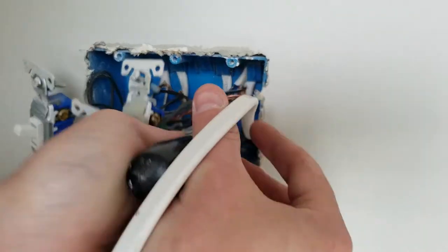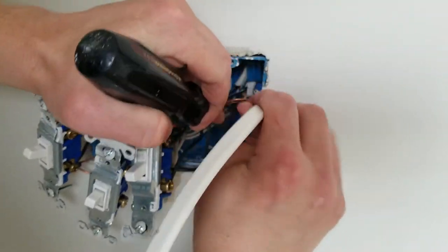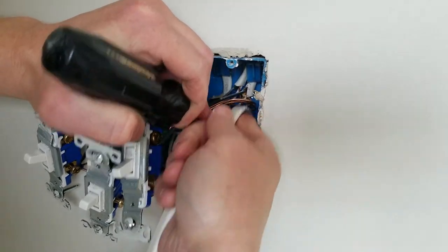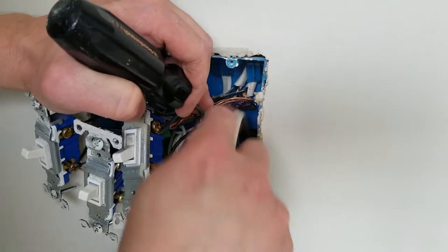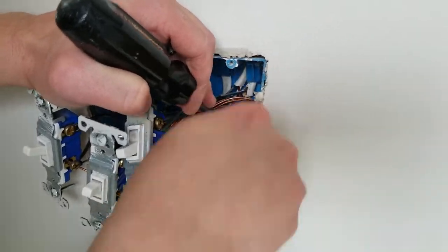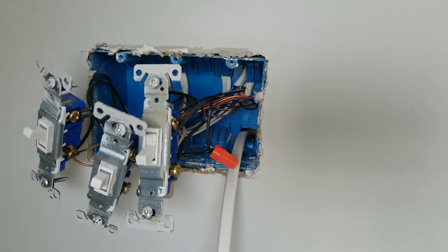So here I'm using a flat head screwdriver to pry up one of the trap doors in the back of the box. I'm going to feed about 4 feet of wire into the wall. That way I know there's enough in the wall that I can fish it out with my hand using the hole I cut out for the electrical box.